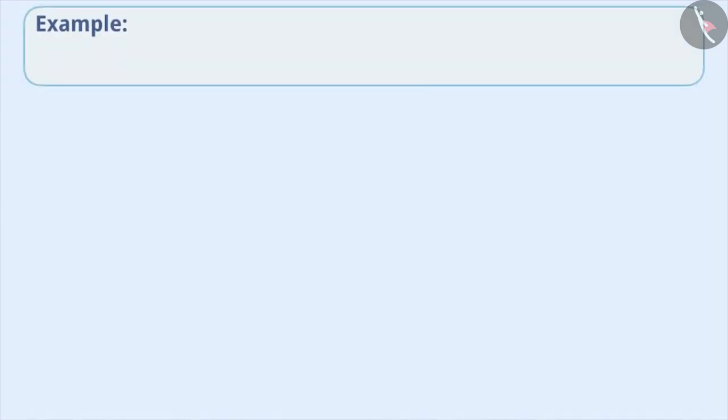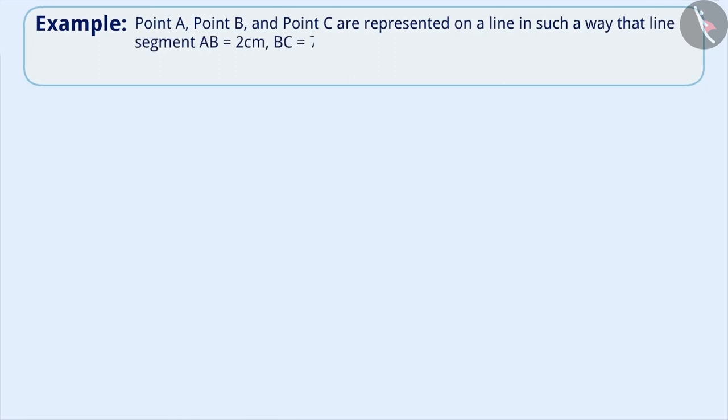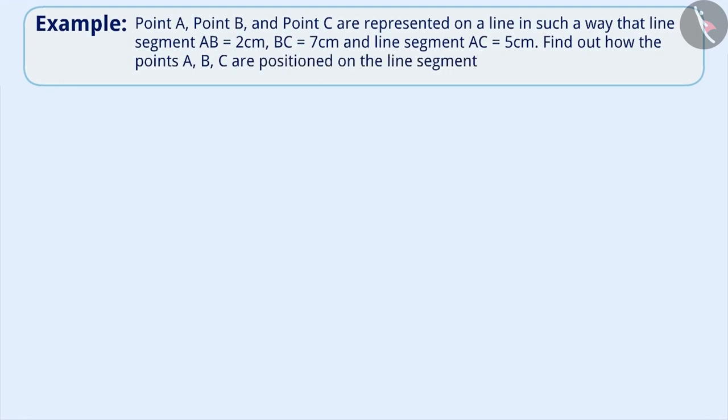Next example, point A, point B and point C are represented on a line in such a way that the line segment AB is equal to 2 cm, BC is equal to 7 cm and line segment AC is equal to 5 cm. Find out how the points ABC are positioned on the line segment.